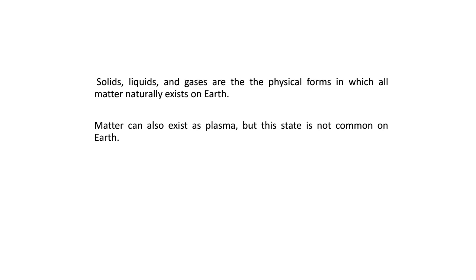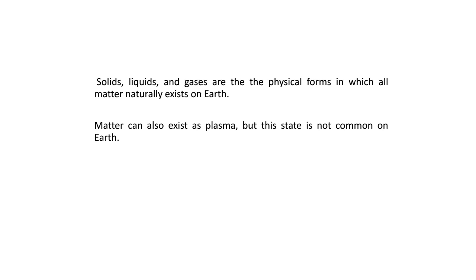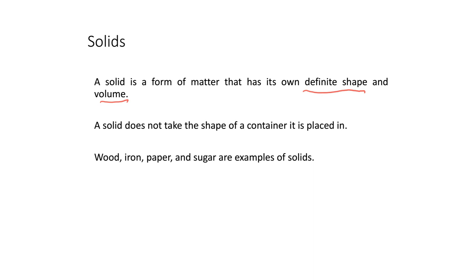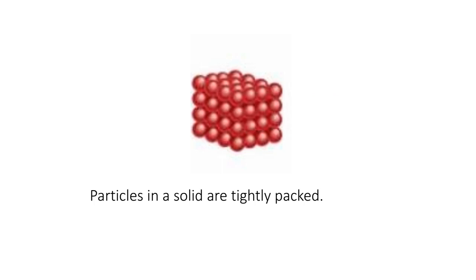A solid is a form of matter that has its own definite shape and volume — underline definite shape and volume. Solids do not take the shape of the container they're placed in; in fact, they usually are the container. Wood, iron, paper, and sugar are examples of solids. Particles in a solid are tightly packed.